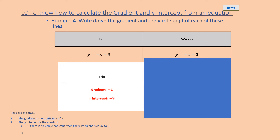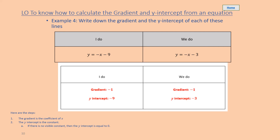Pause the video while you have a go at the we do: y equals negative x subtract three. Well done — the gradient is minus one, and the y-intercept is minus three.